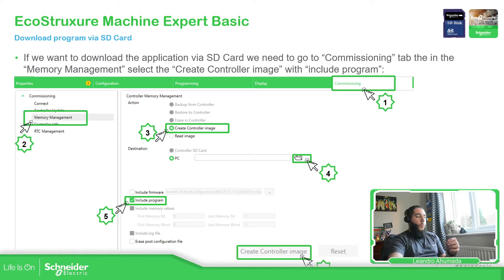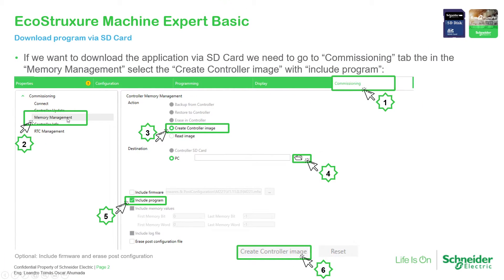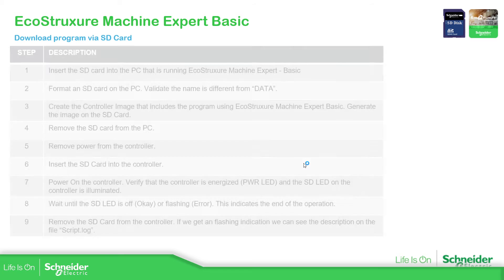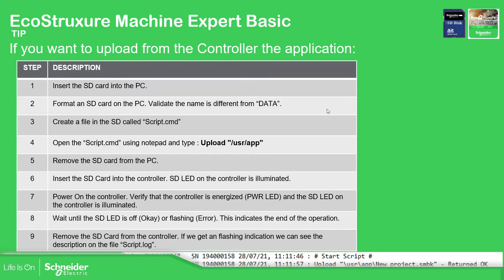Basically what you need to do is go to Commissioning, select Memory Management, create the controller image specifying the path where you want to save this image — which can include the program and optionally the firmware — and finally create the image for the controller. Let's try to do this and these are the steps we need to follow to make it work.